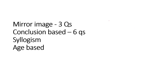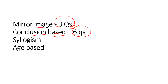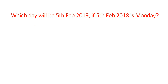So let's look at the reasoning questions. First, we have 3 mirror image questions, 6 conclusion-based questions, and syllogism-based questions. So this is the September 24th shift 2 reasoning paper. Some of those questions we will look at in this video. So let's start with the first question.